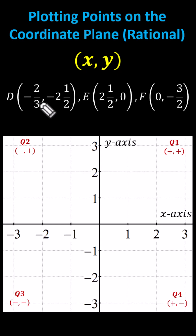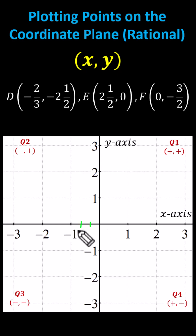To locate negative two-thirds on the x-axis, we'll break the interval from zero to negative one into three equal parts so we can count by negative one-thirds. Starting at x equals zero, we have x equals negative one-third, x equals negative two-thirds. Next would be x equals negative three-thirds, which is equal to negative one.